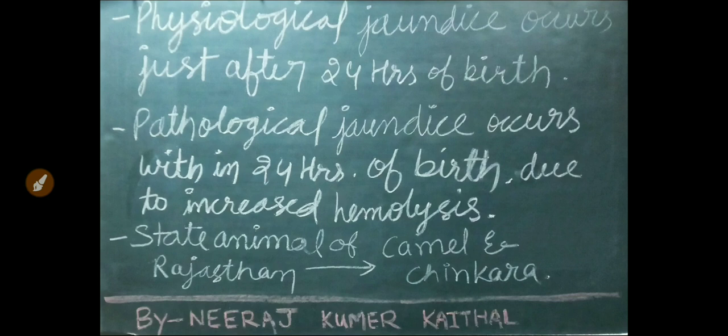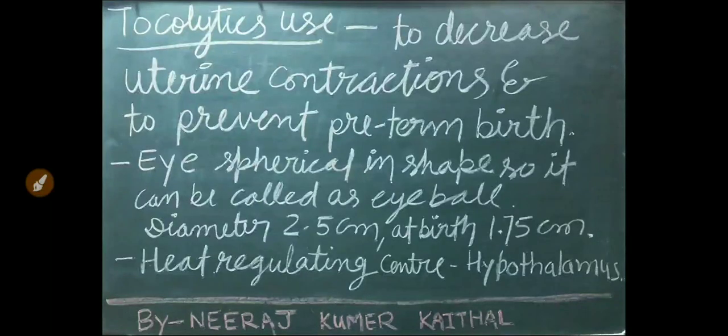Physiological jaundice occurs just after 24 hours of birth; pathological jaundice occurs within 24 hours of birth due to increased hemolysis. State animals of Rajasthan are the camel and chinkara. Tocolytics are used to decrease uterine contractions and prevent preterm birth. The eye is spherical in shape and is called the eyeball; diameter in adults is 2.5 centimeters, at birth 1.75 centimeters.